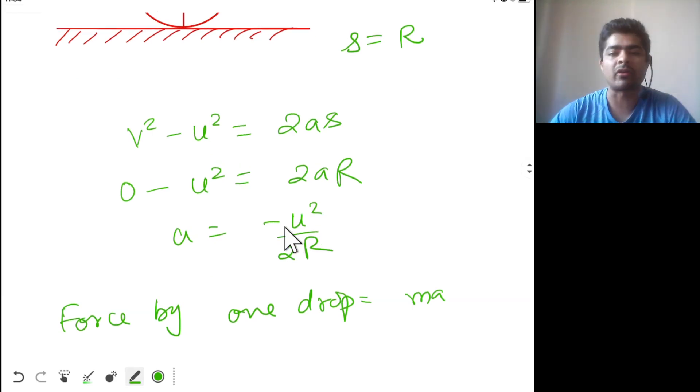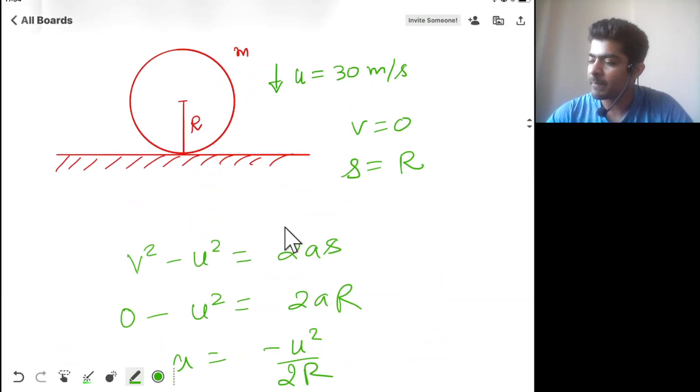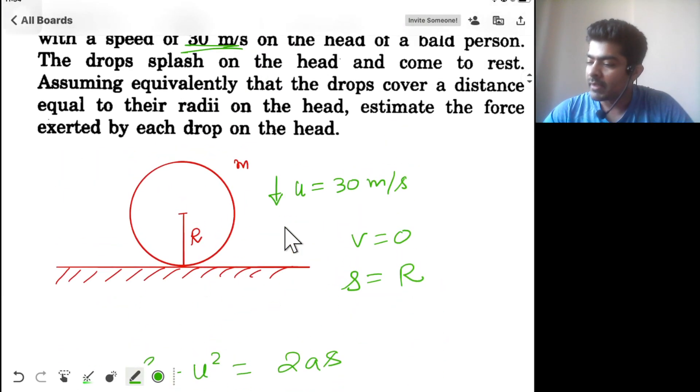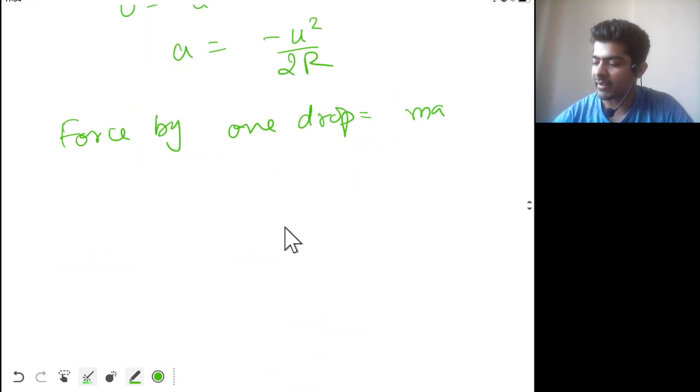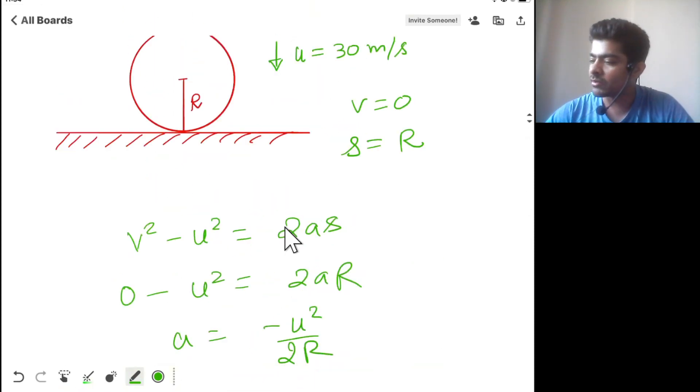Mass of one drop into acceleration of the drop. That's what they're asking in the question, estimate the force exerted by each drop on the head. We ignore the minus sign because we are finding magnitude, so mu squared by 2r.